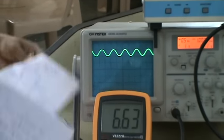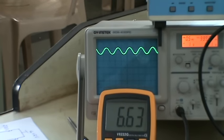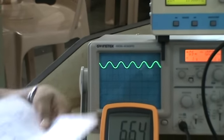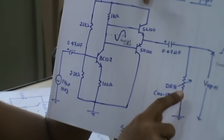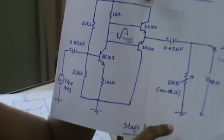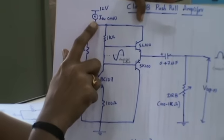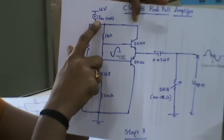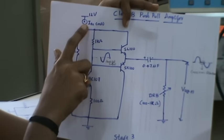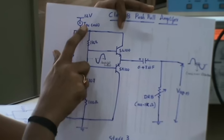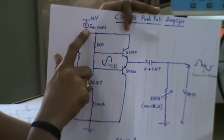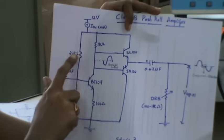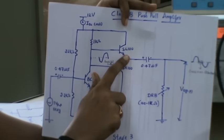Next stage is the Class B push-pull amplifier. Here to take the output we are connecting the DRB. By varying the values of DRB we are calculating the powers. Also here the multimeter is connected to calculate the IDC value, where positive is connected to the supply and the ammeter negative is connected to the junction of 22 kilo, 1 kilo, and the SL100.